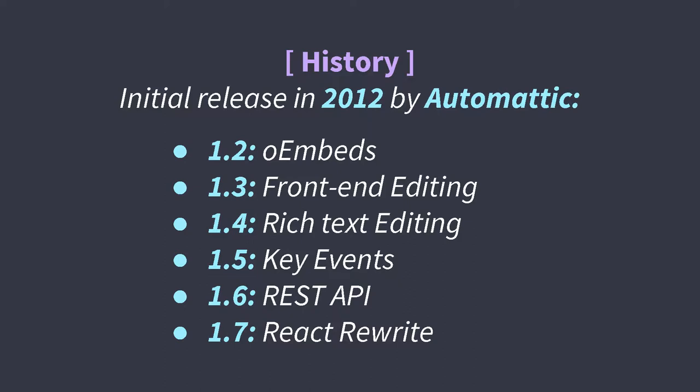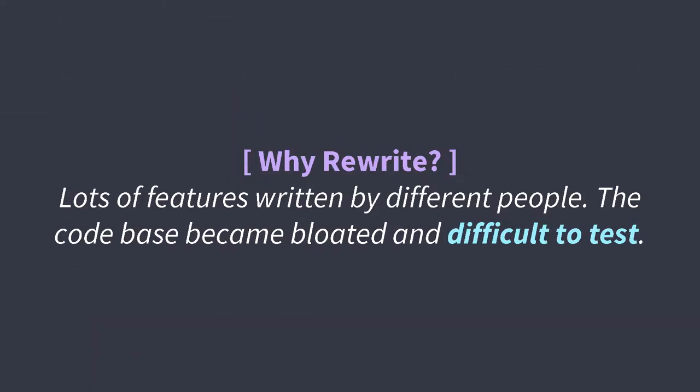We're now at version 1.7, which is the React rewrite. You're probably thinking, why rewrite it? The truth is it was written by so many different people — each release had someone in charge of that release and that feature, and they probably thought their feature was the best. Over time, all those features were getting harder to test. By version 1.6 you could tell everything didn't really gel together. We had a bloated plugin that just needed a refresh, and it was pretty easy for something to go wrong without anyone noticing because the features were difficult to test.